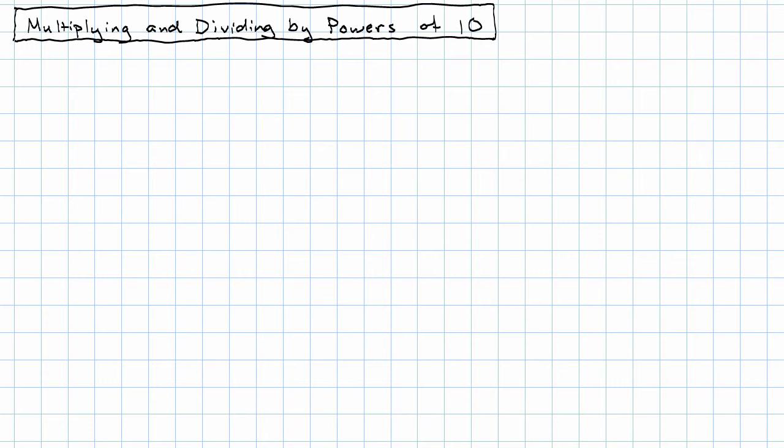Multiplying and dividing a decimal by powers of 10 is very, very easy. It's probably easier to do it by hand than by using a calculator.